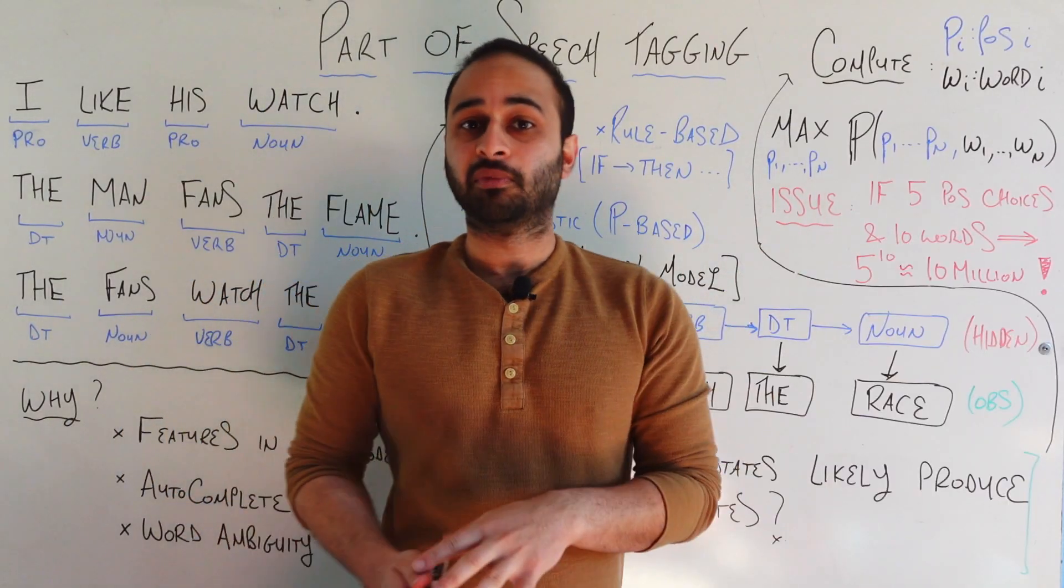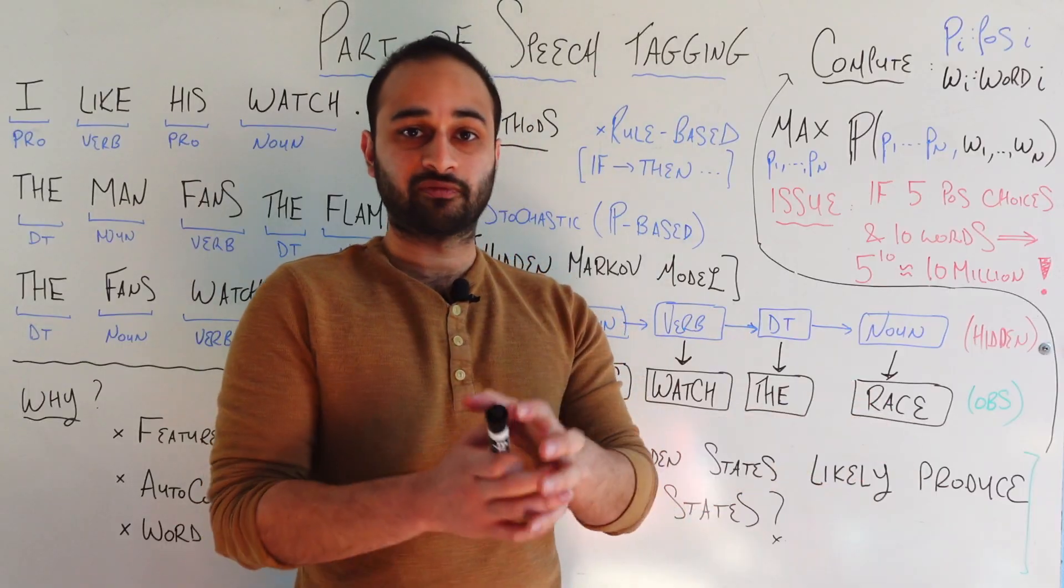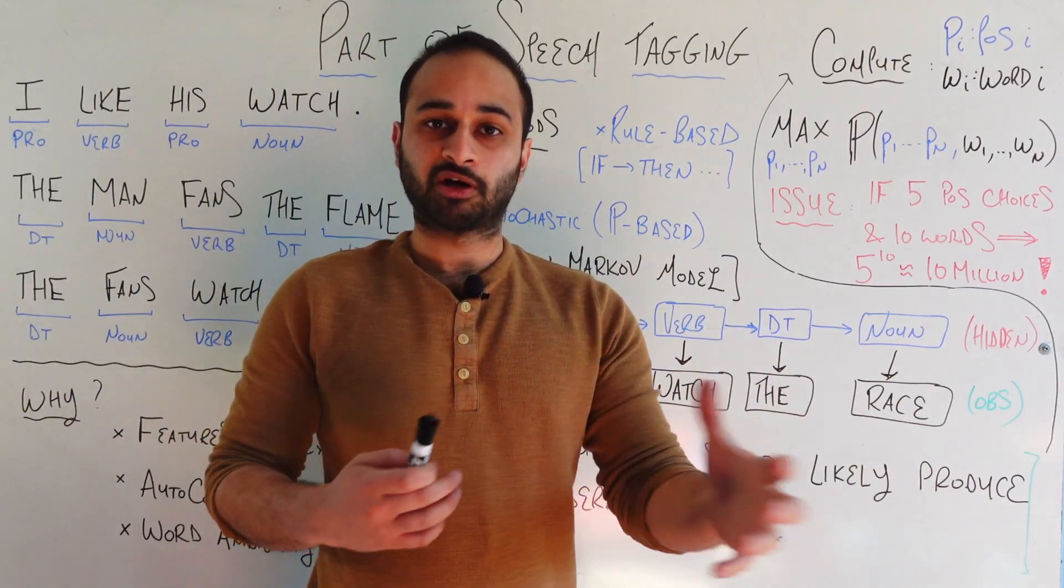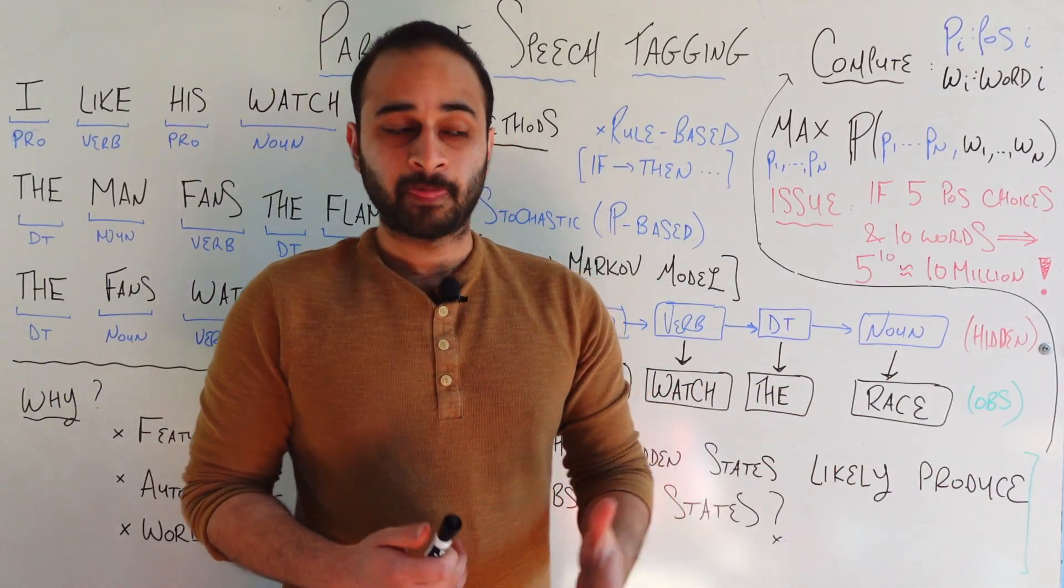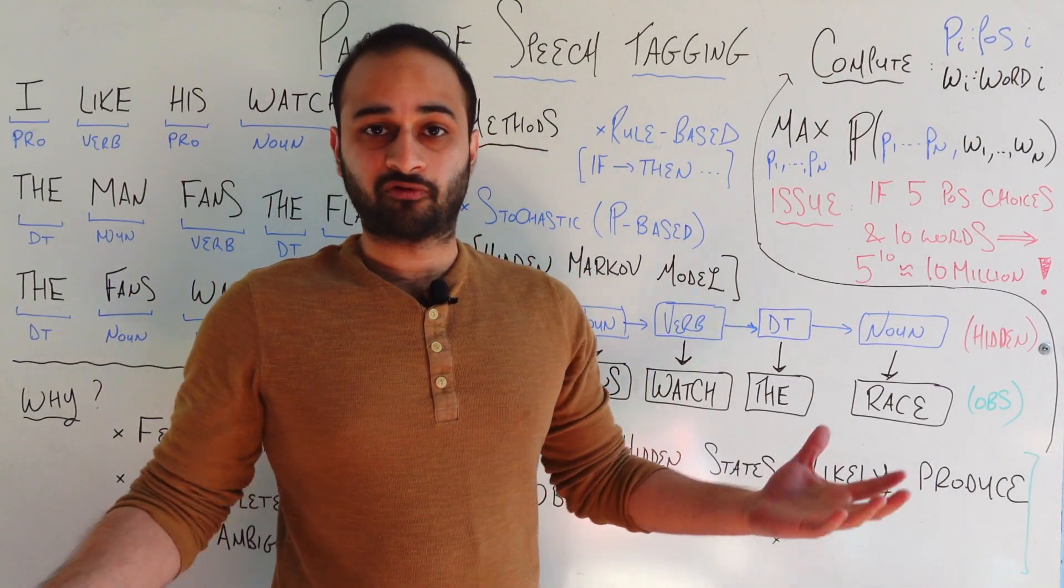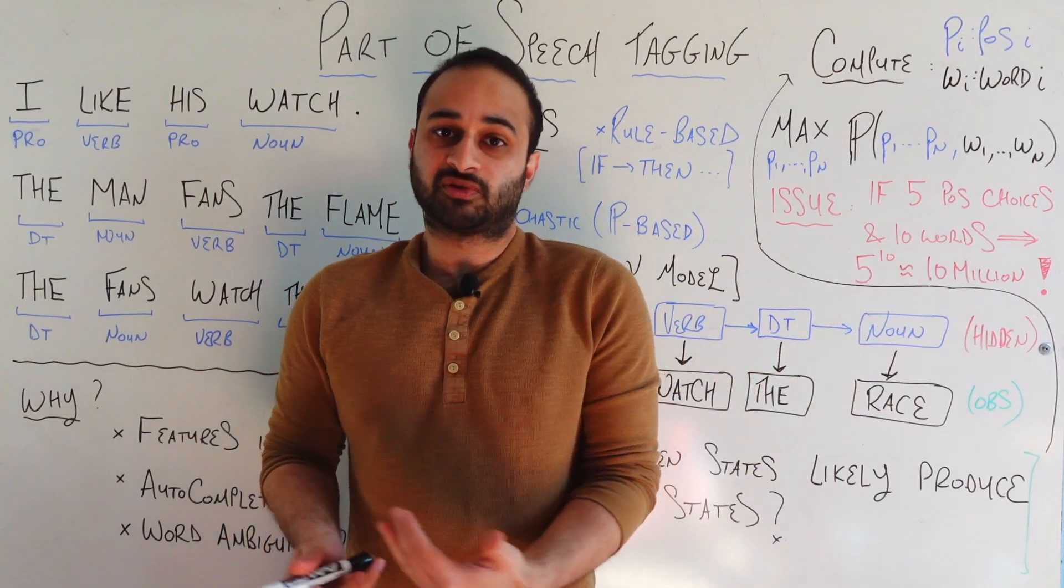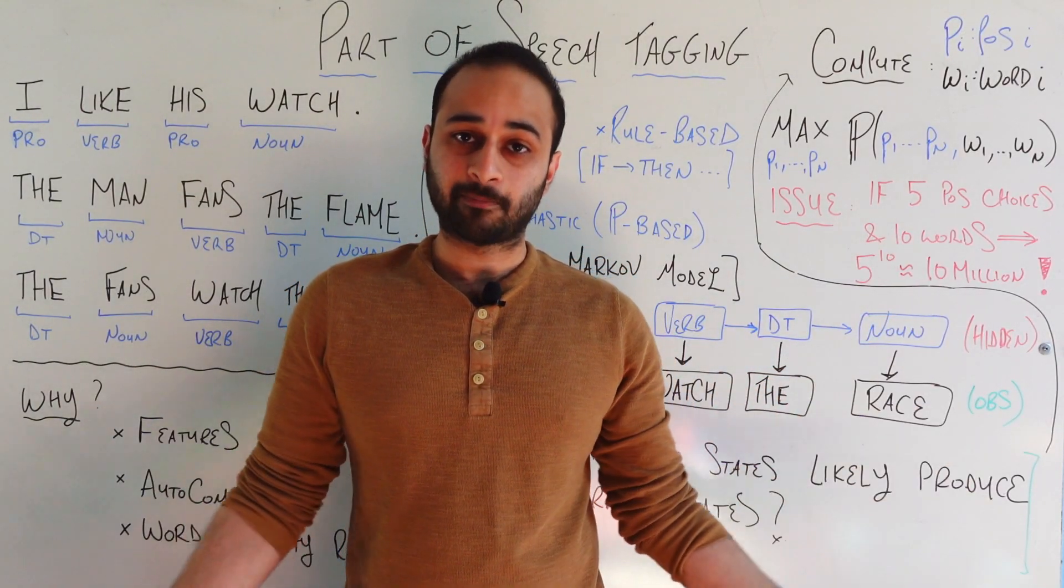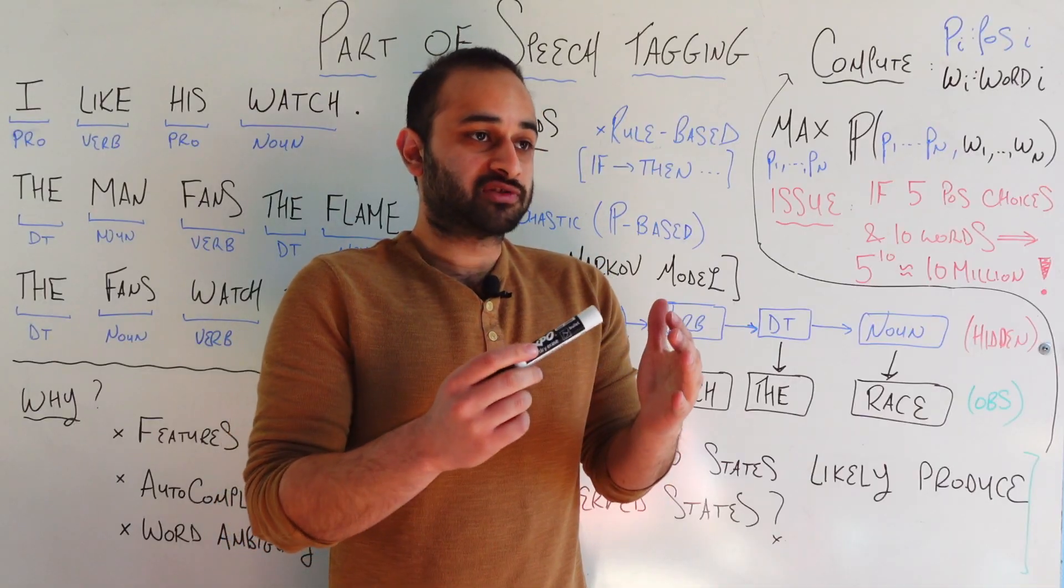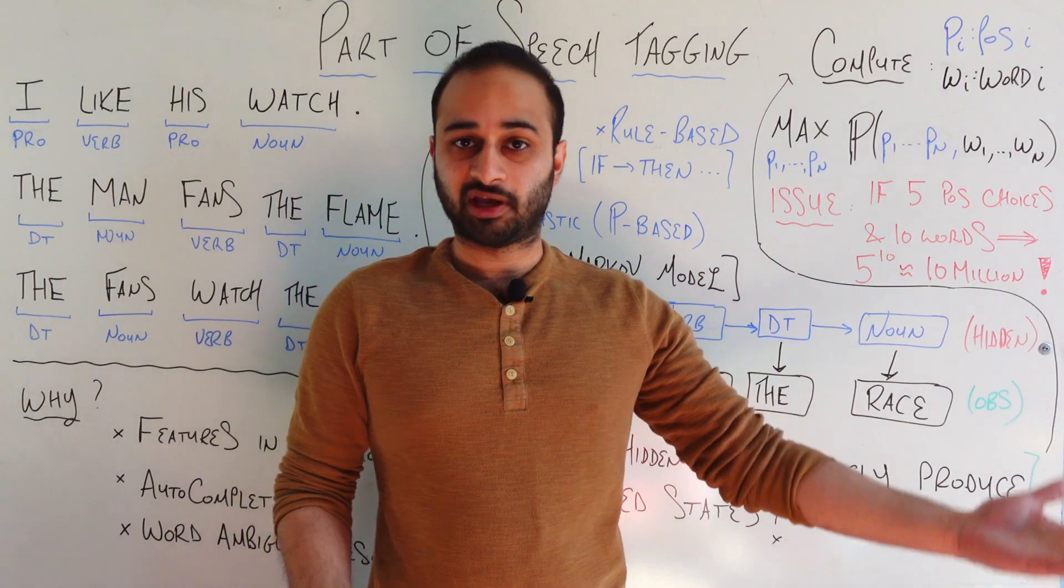Even for a small sentence of length ten and a small number of parts of speech, that's just five. So we need some kind of more efficient algorithm than just doing a brute force search over all of these possibilities in order for us to do this part of speech tagging in any reasonable amount of time. And that's where we get this really cool method called the Viterbi algorithm, which is, again, going to be a topic of the next video. I'll walk you through actually this exact example. The fans watch the race.